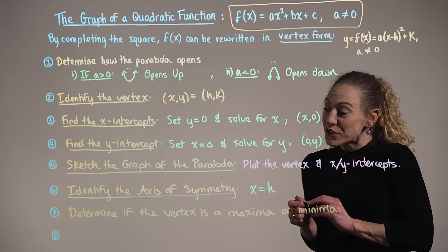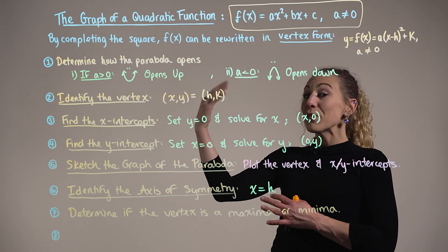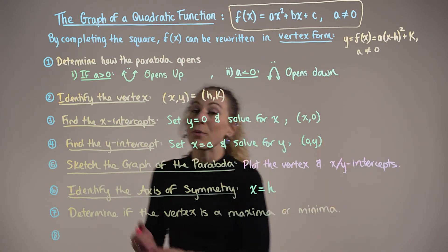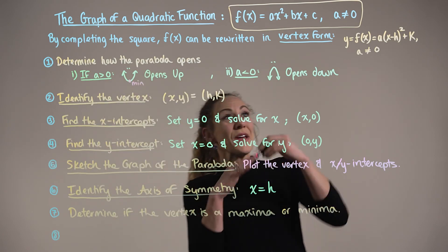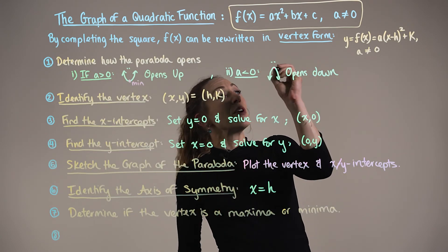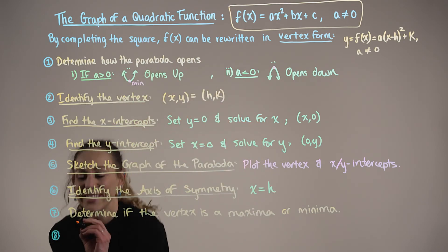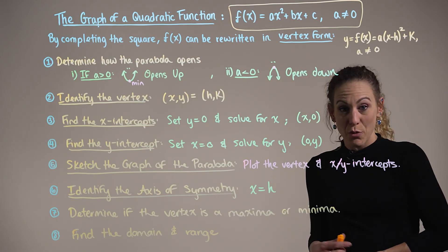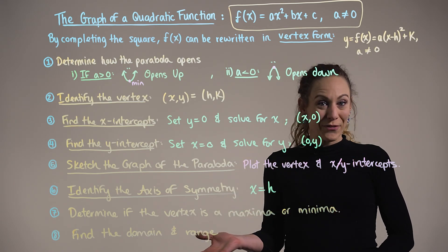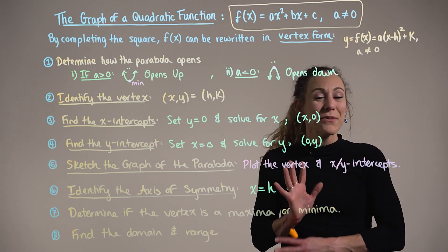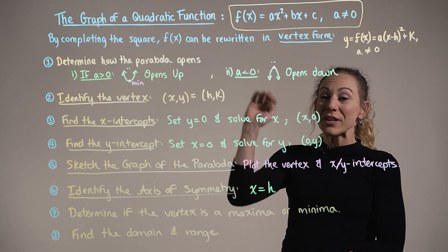Step seven: determine if the vertex is a maximum or minimum. If the parabola opens upwards, the vertex is a minimum point; if it opens downward (concave down like a frown), the vertex is the maximum point. Step eight: find the domain and range. Since a quadratic is a polynomial function, there are no domain restrictions — x can be any real number. For the range, keep the y-component k of the vertex in mind.